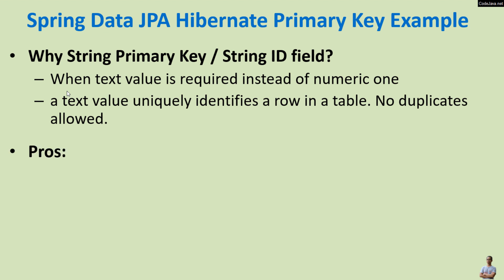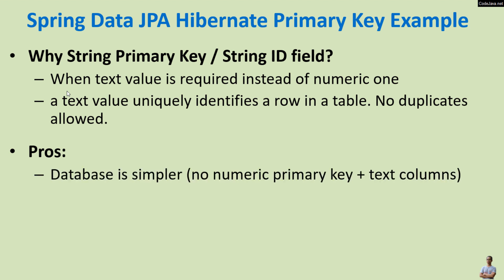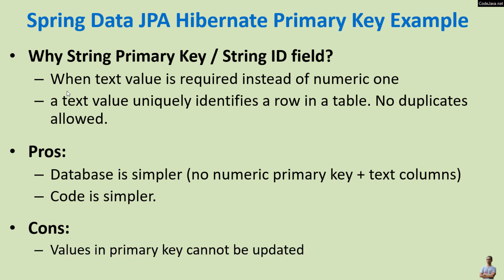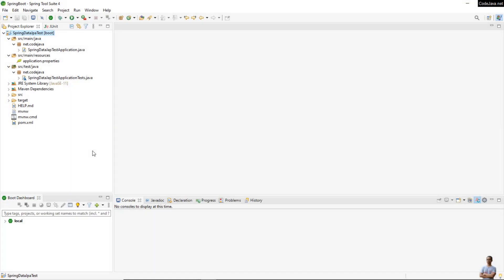The pros of using a string primary key is that the database is similar to a numeric primary key and text columns, and the code is also similar. The constraint is that the values in a primary key cannot be updated. Now let me show you a code example.